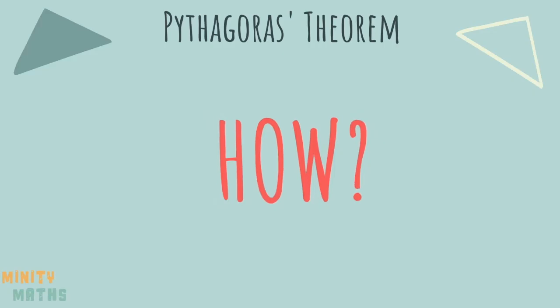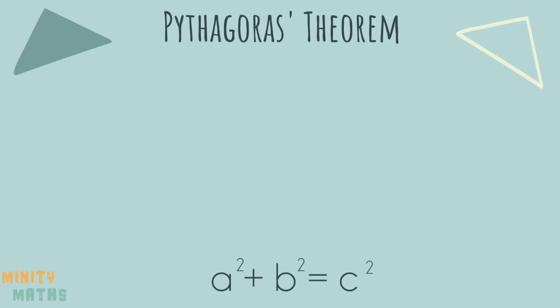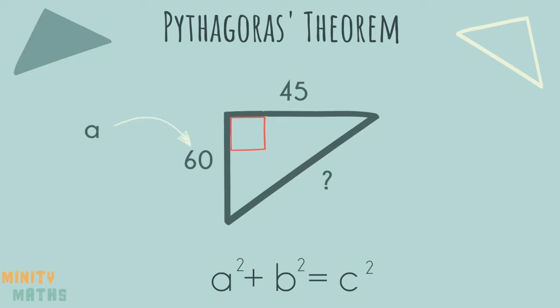So how do we do this? First you may find it helpful to write down the formula each time. Then label the sides a, b and c remembering that c is the hypotenuse.